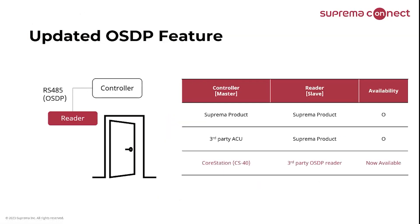Now, updated OSDP feature. What has changed in BioStar 2 version 2.9.1? Before this update, when using a controller and reader both being Suprema products, it was available, as well as having a third-party access control unit as a master with a Suprema product in slave mode. The new feature now allows you to use the Suprema CoreStation CS40 as a master, also allowing a third-party OSDP reader as a slave — this is now available.